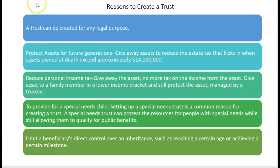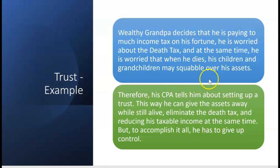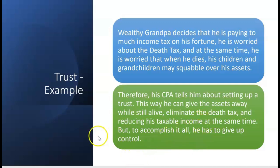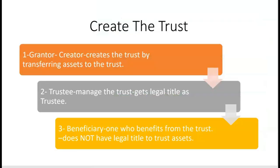Consider wealthy grandpa who is paying too much income tax, worried about the death tax since he has about 14 million dollars, and worried that when he dies his children and grandchildren might fight over his assets. His CPA tells him about setting up a trust. This way he can give assets away while still alive, eliminate the death tax, and reduce his taxable income — all at the same time. His CPA says: create the trust, transfer the assets to the trust, and choose a trustee to manage it. That trustee will get legal title to those assets while they're in the trust.